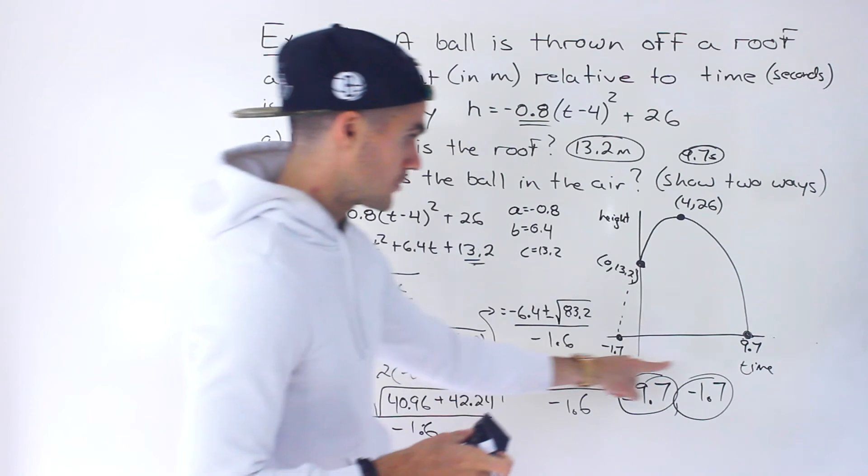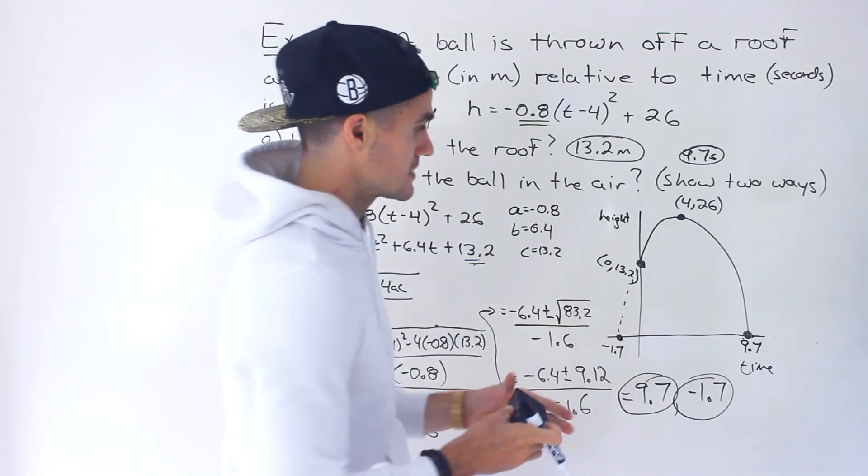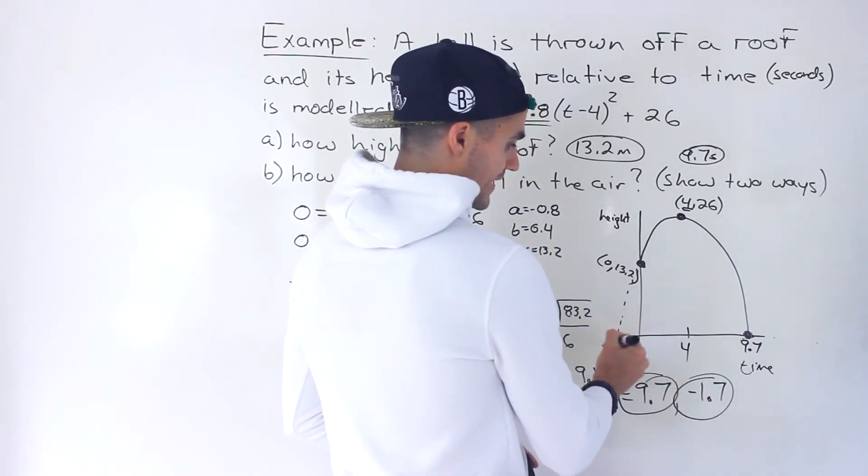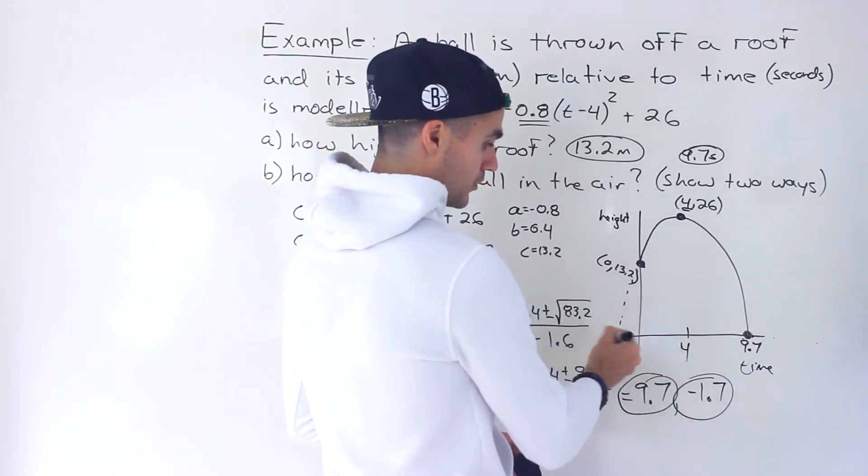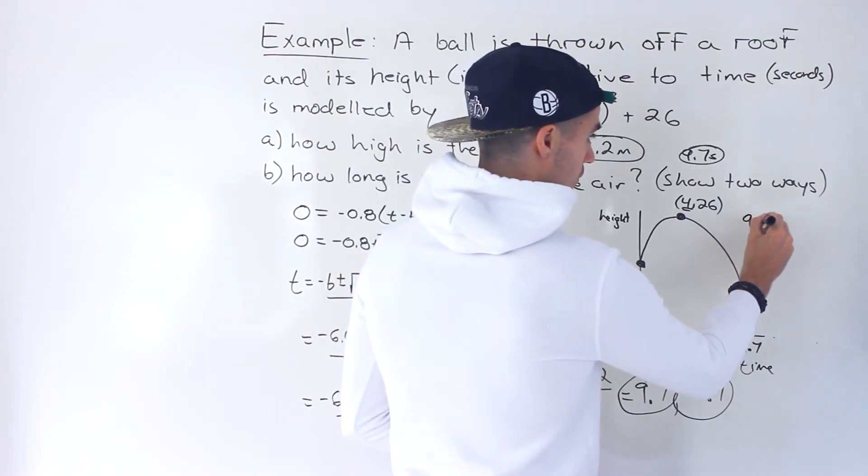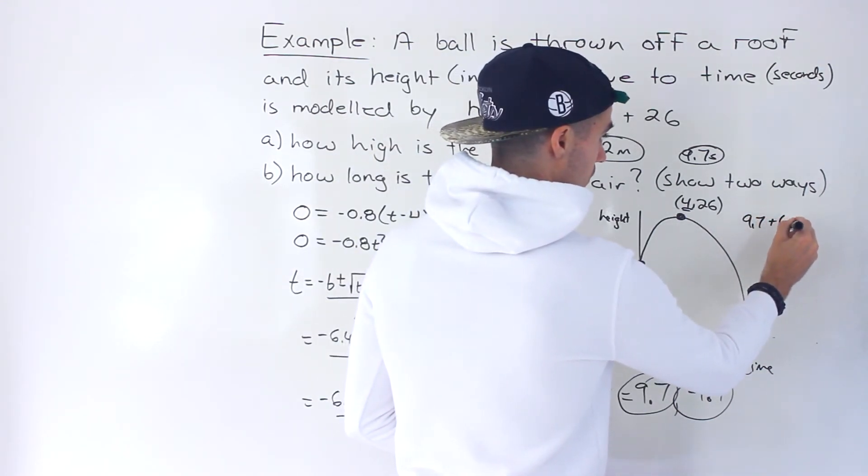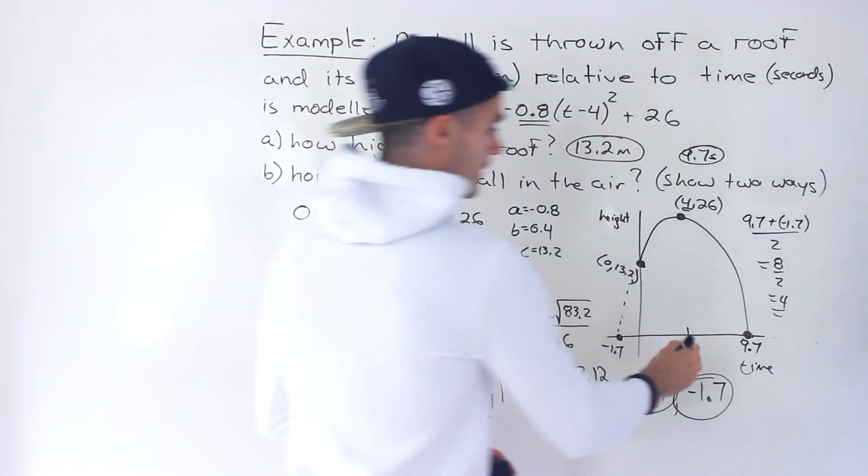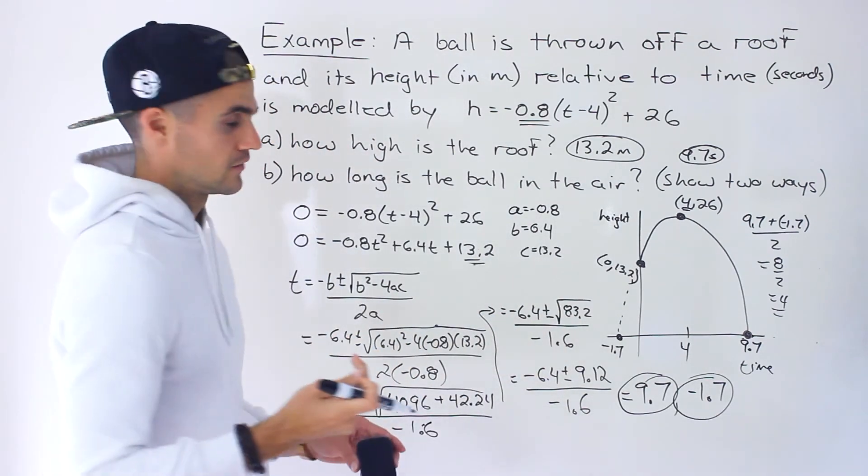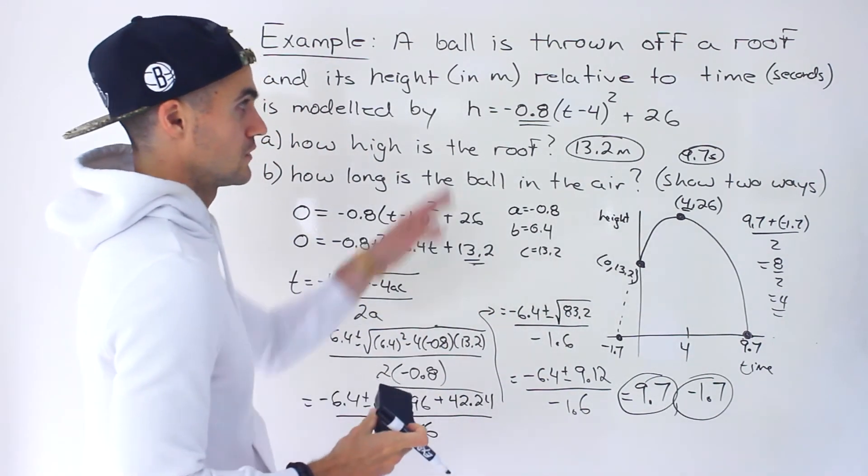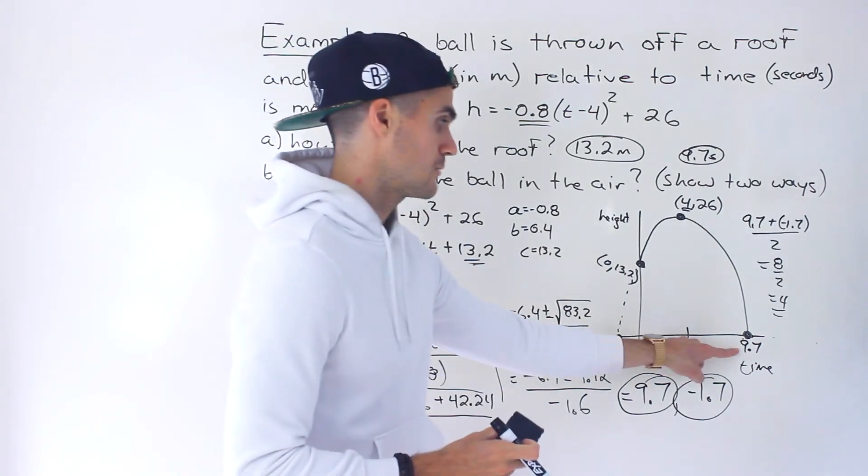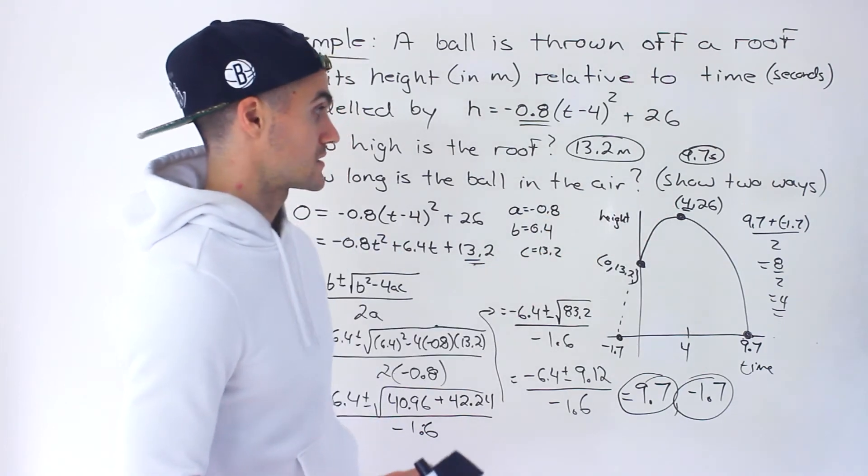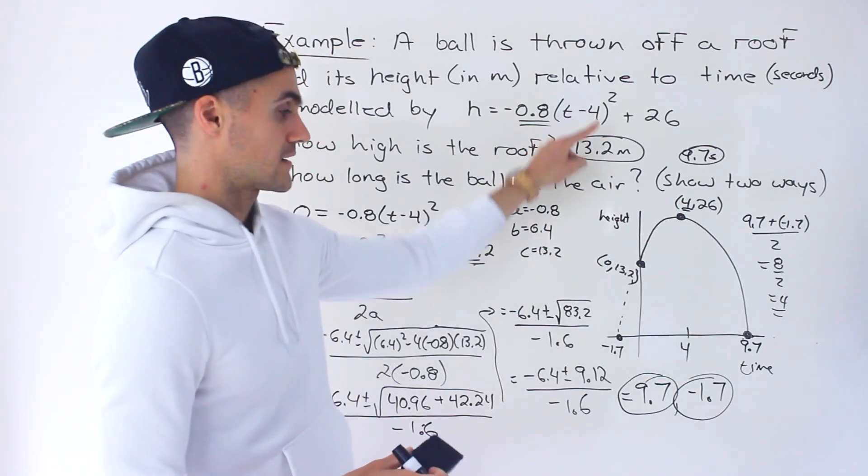Also one thing I want to mention, notice that these numbers make sense because the axis of symmetry we know is 4, that x value of the vertex. And notice that 4 is in the middle of 9.7 and negative 1.7. If I take 9.7 plus negative 1.7 and divide it by 2, this would be 8 over 2, which would give us 4. So that's a nice quick little check that you can do. If you're given a problem like this where it's given in vertex form and you have to find the intercepts, you could see if the midpoint between the intercepts is indeed going to give you that given axis of symmetry or that given x value of the vertex.